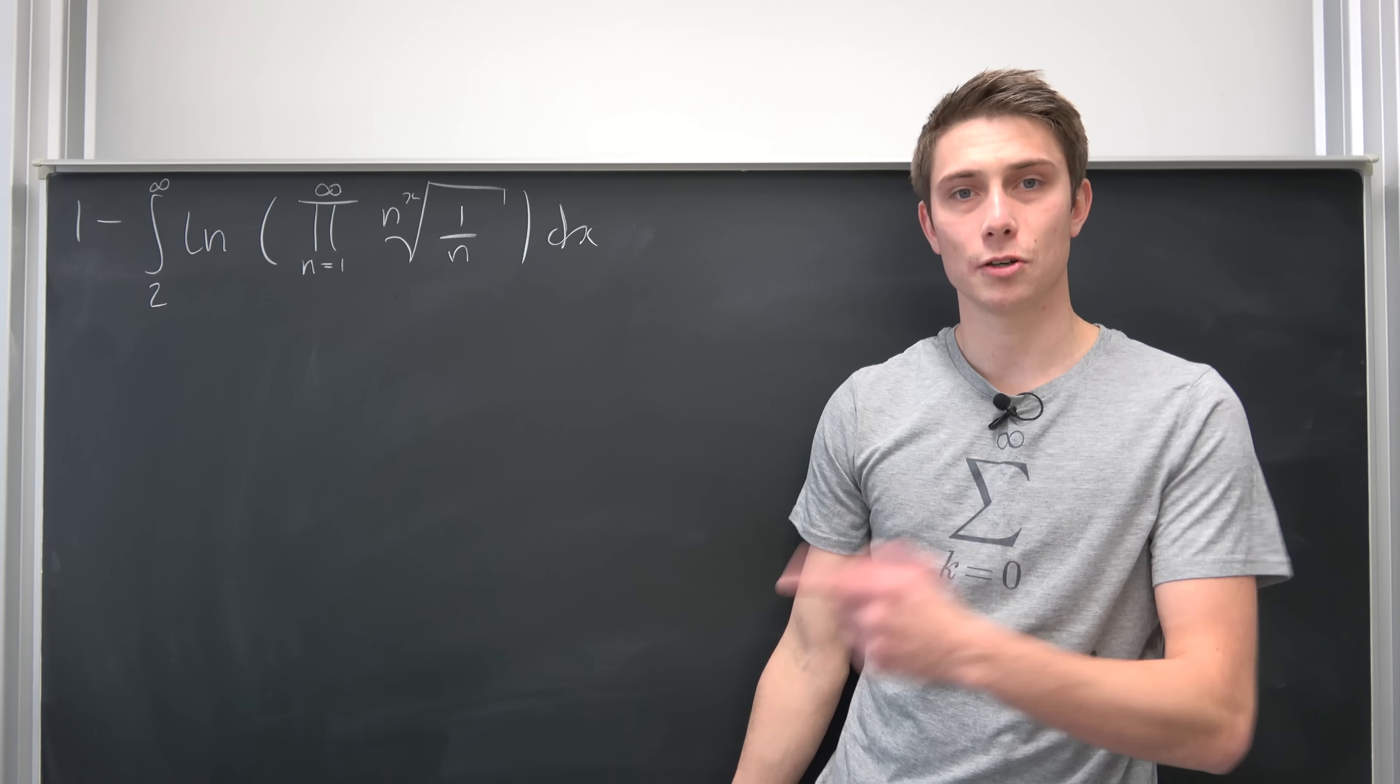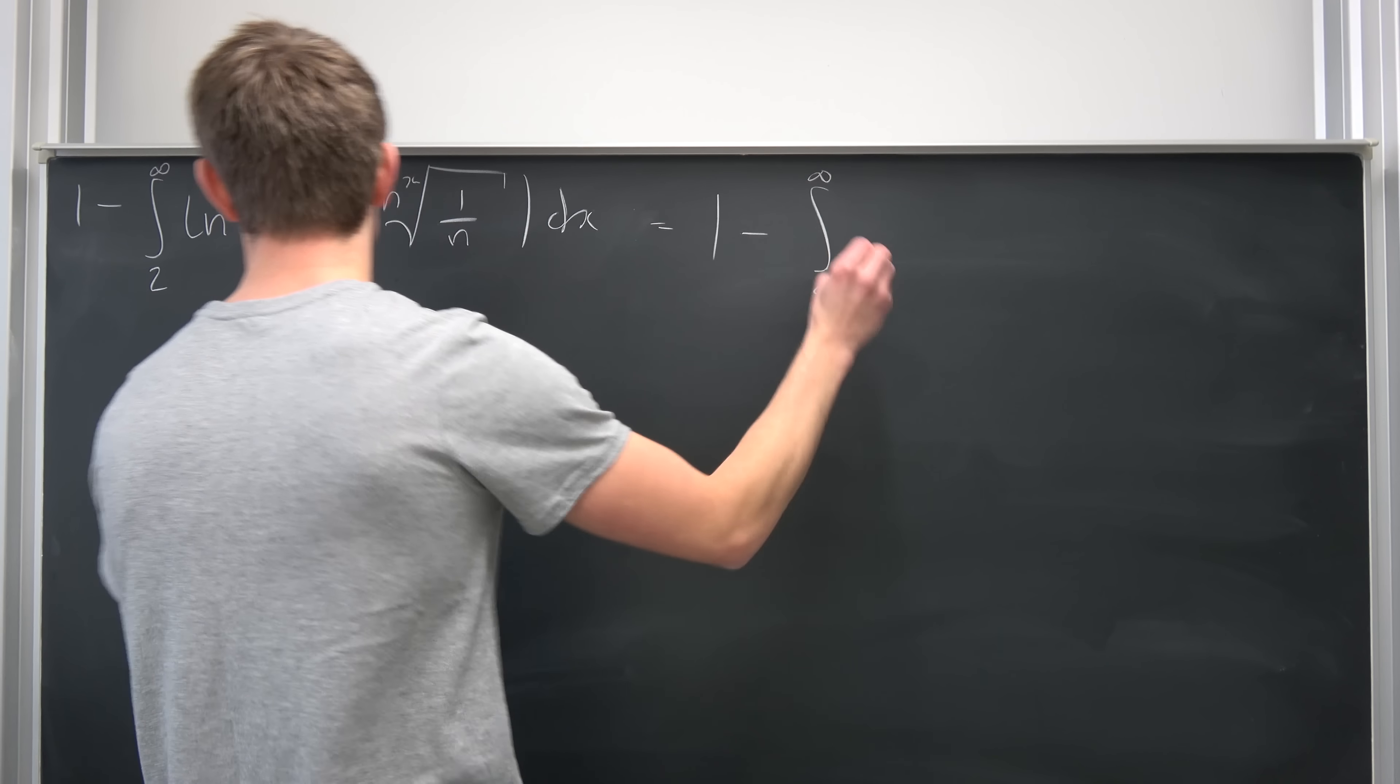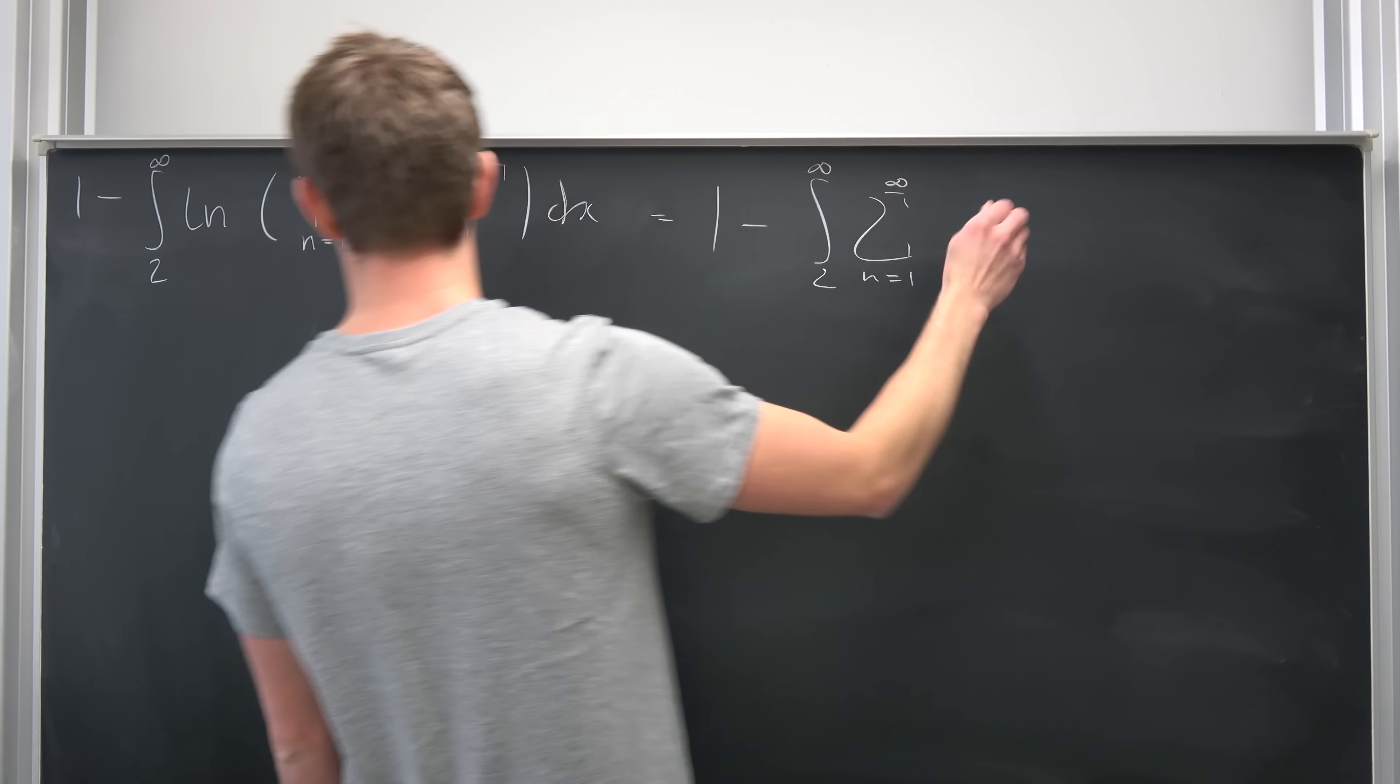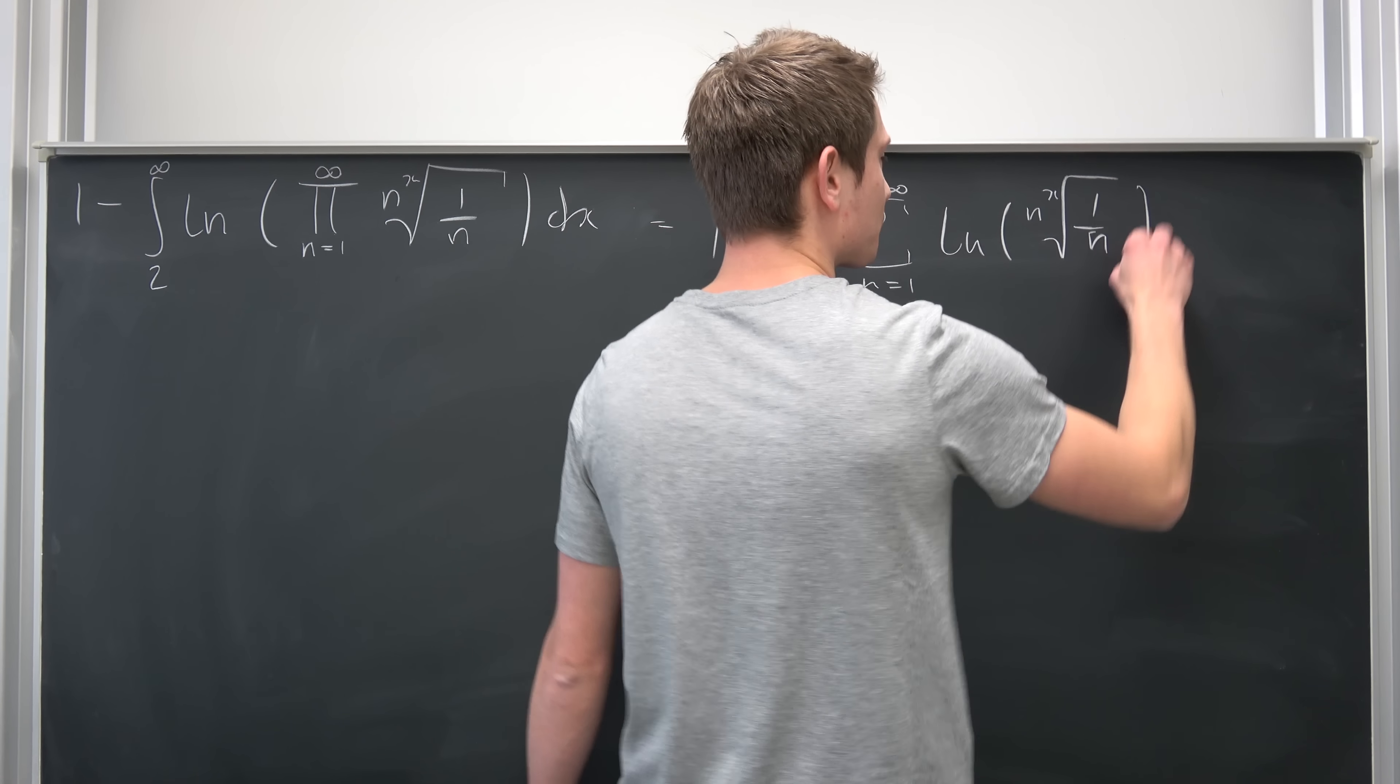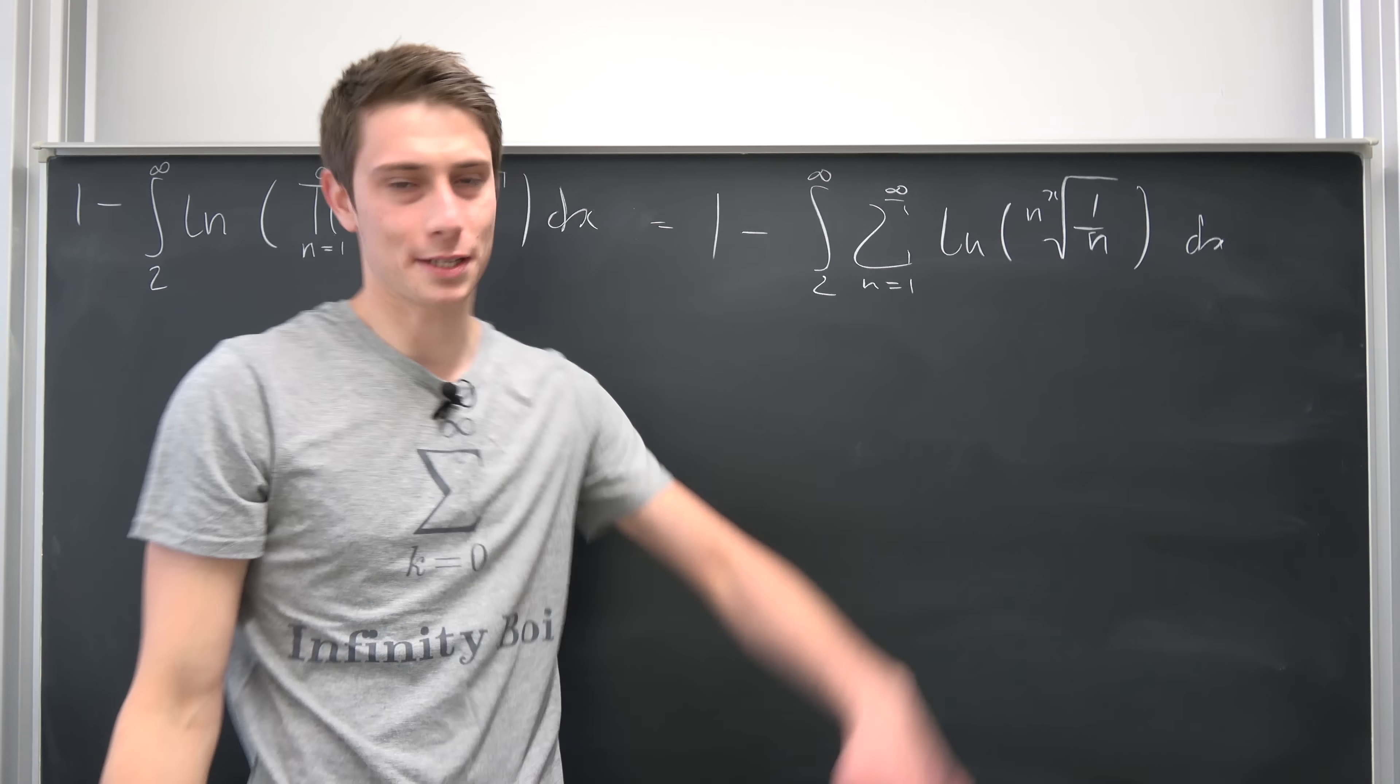So let's bring this infinite multiplication to the outside to turn this into an infinite summation. That's nothing but 1 minus the integral running from 2 to infinity of the infinite sum running from 1 to infinity of the natural log of the n to the x root, I don't even know how to pronounce this, n to the x root of 1 over n, integrated with respect to x. Don't forget your differentials.